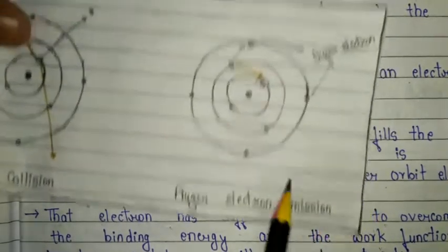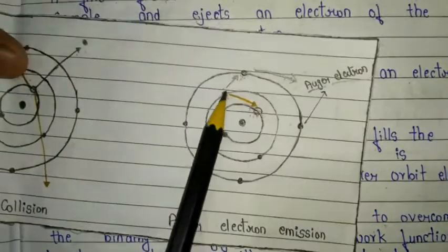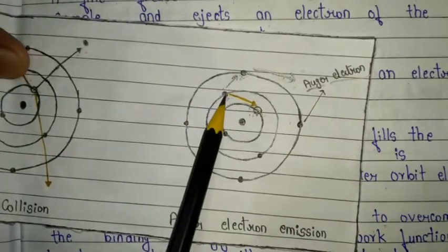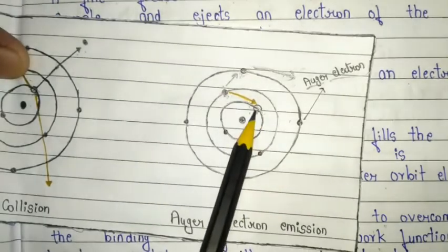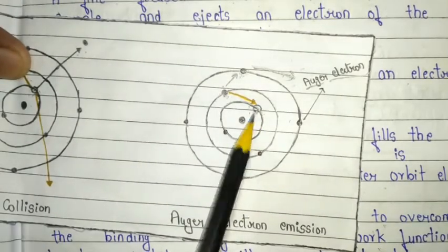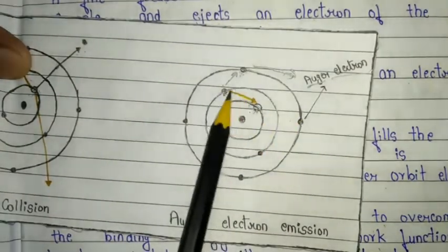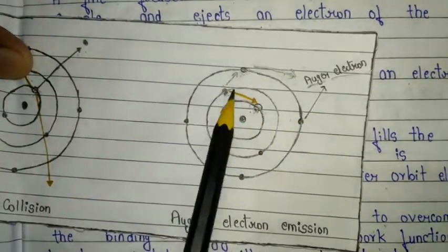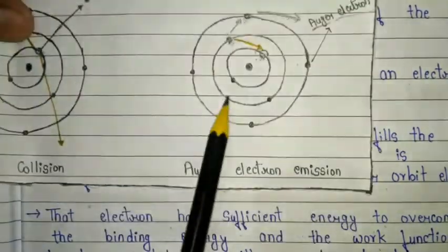When the higher-energy electron fills the hole, the release of energy is transferred to an electron in an outer orbit.